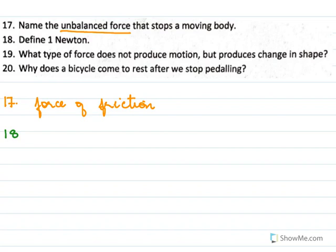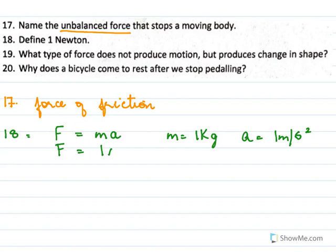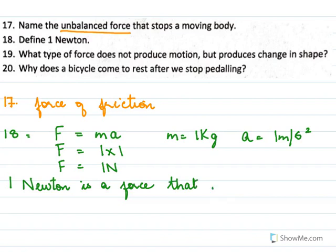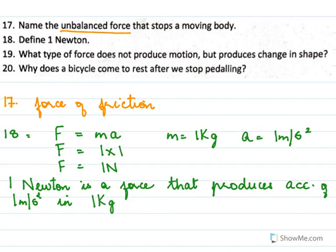Define 1 Newton. Using F = m × a: when mass is 1 kg and acceleration is 1 meter per second square, F = 1 × 1, so F = 1 Newton. Therefore 1 Newton is a force that produces an acceleration of 1 meter per second square in a 1 kg body.